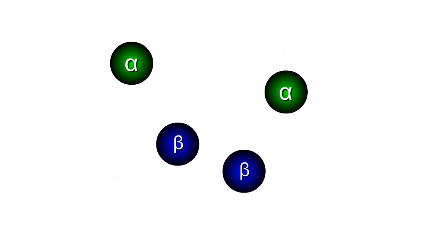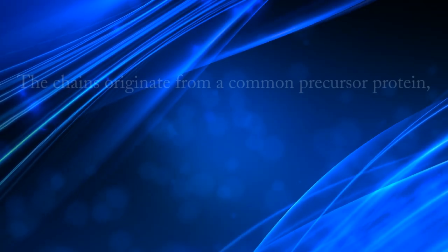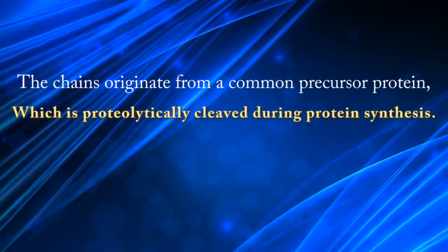Haptoglobin, in its simplest form, consists of two alpha and two beta chains connected by disulfide bridges. The chains originate from a common precursor protein, which is proteolytically cleaved during protein synthesis.